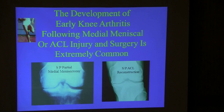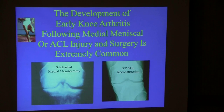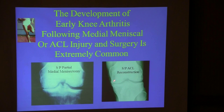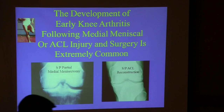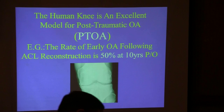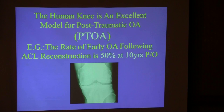The development of early knee arthritis following meniscal or ACL injury and surgery is extremely common. Here's an example of somebody who had a partial meniscectomy and developed arthritis in the medial compartment, and an ACL reconstruction with arthritis in the medial compartment. Therefore, the human knee is an excellent model for post-traumatic osteoarthritis.